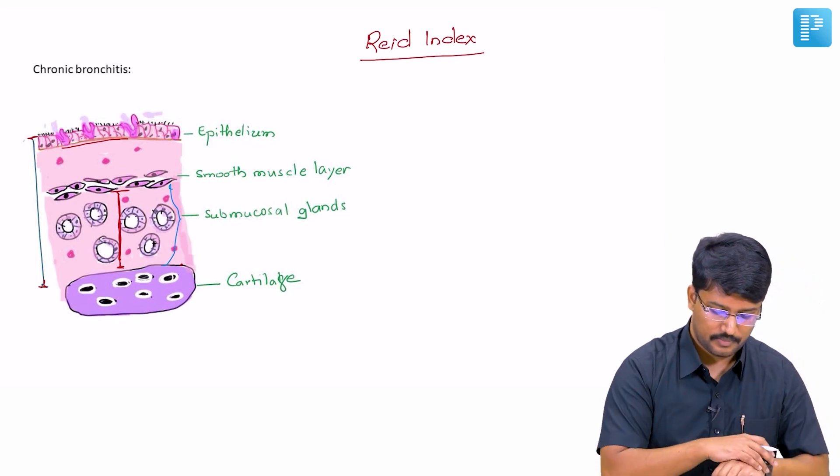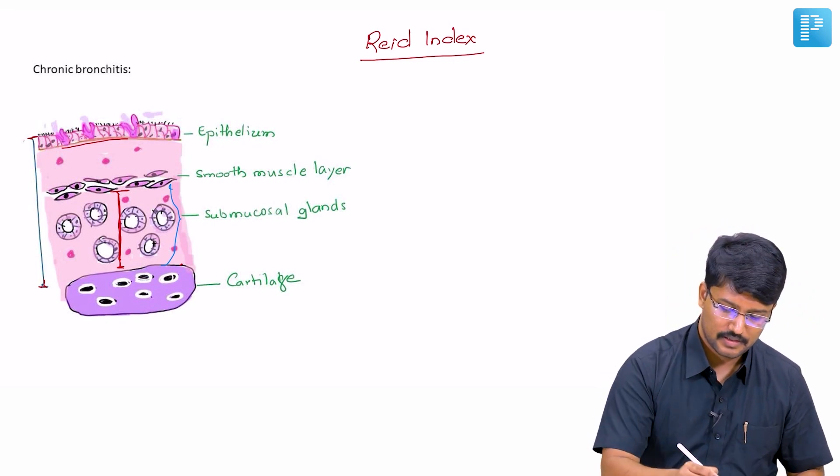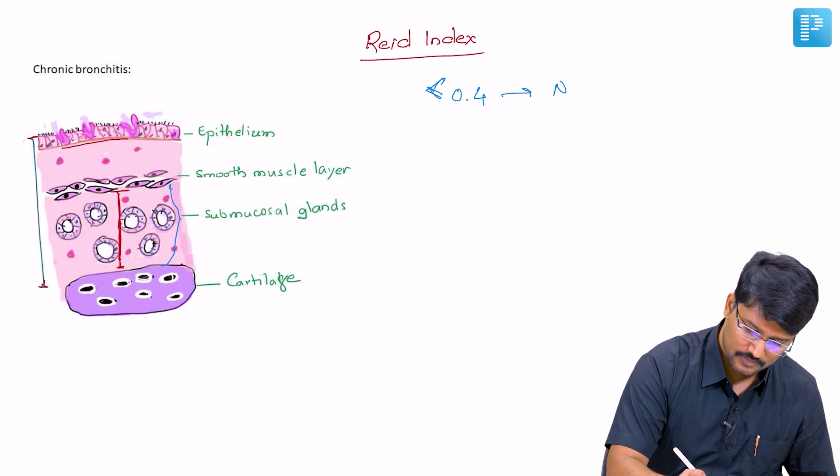Normally, in a normal person, the submucosal glands are limited in number and that is why the Reid index is usually less than 0.4 normally.